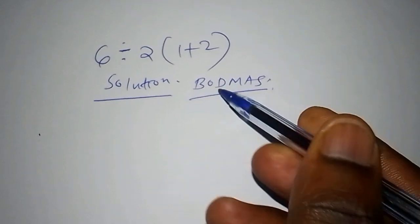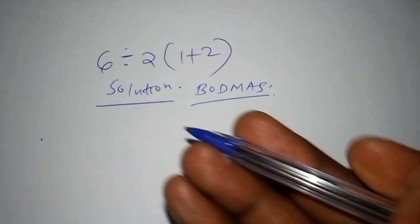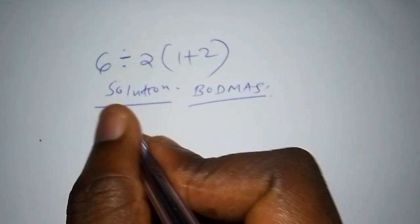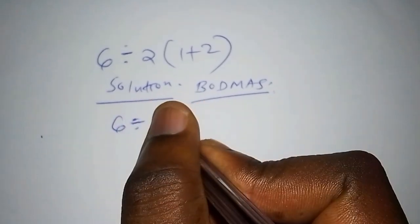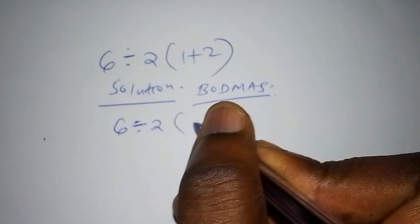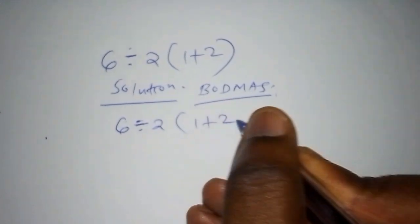So once we have BODMAS, we are able to work out this math problem. So we have 6 divided by 2 into bracket 1 add to 2. Close the bracket.